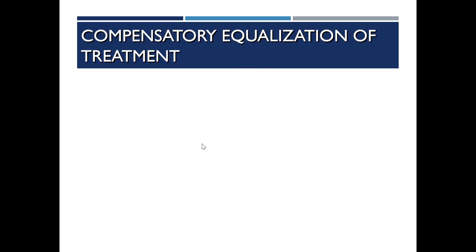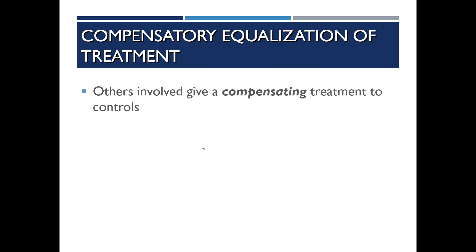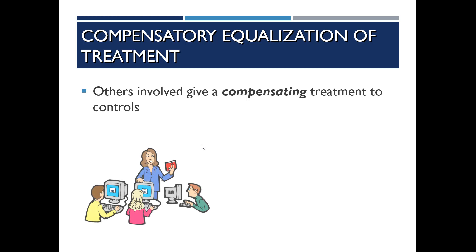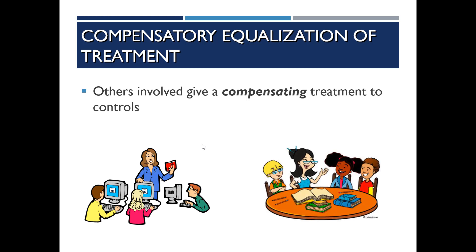Compensatory equalization of treatment is a long way of saying that others involved in the study — like teachers — give a compensating treatment to the control group to make up for the fact that they aren't receiving the special intervention. For example, if the teacher of the control classroom feels bad that her students aren't getting the new interactive reading comprehension program, she might decide to really focus on reading comprehension anyway, which is not the same treatment but still affects the study negatively.